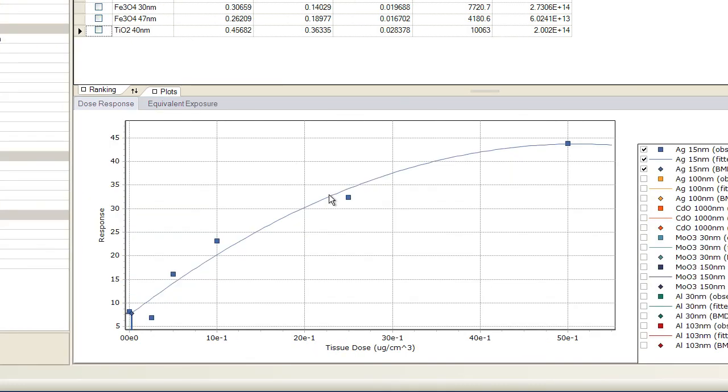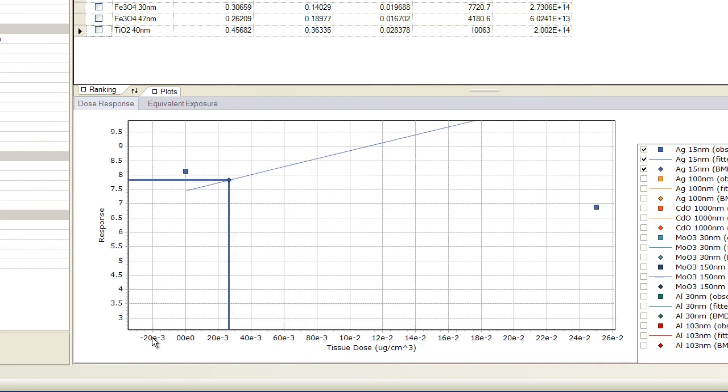For each material, three things are shown in the dose response chart. The original data points, as provided in the dose response table on the materials list, are shown as individual square blocks. The fitted curve is shown as a solid line. And the position of the benchmark dose and the response are shown as a horizontal and vertical line in the chart.